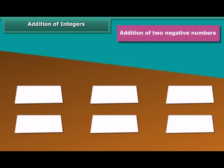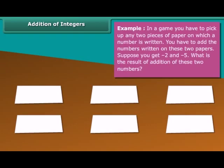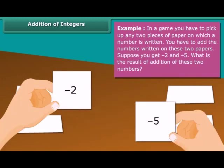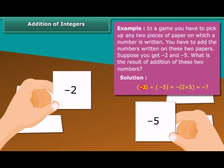Addition of two negative numbers. Example: In a game, you have to pick up any two pieces of paper on which a number is written. You have to add the numbers written on these two papers. Suppose you get minus two and minus five. What is the result of addition of these two numbers? Minus two plus minus five is equal to minus two plus five which equals minus seven.